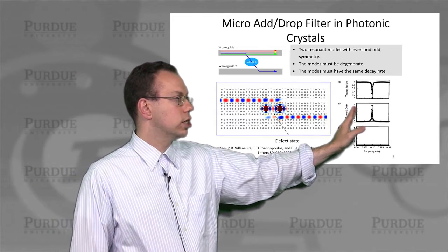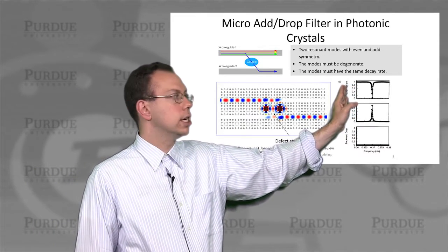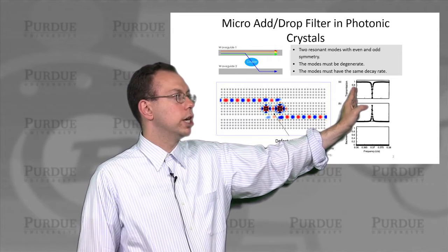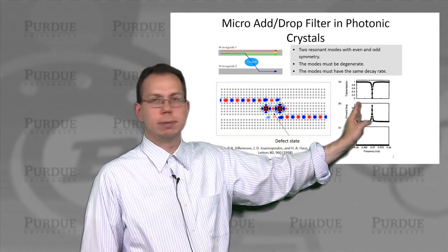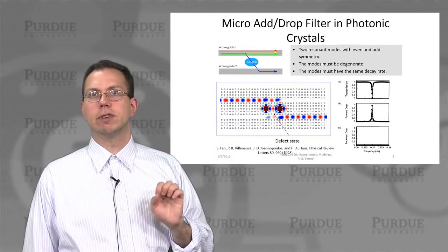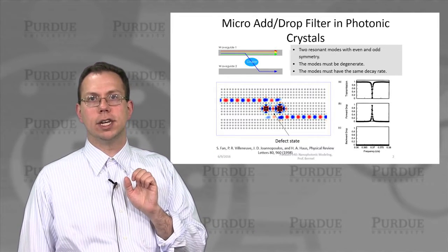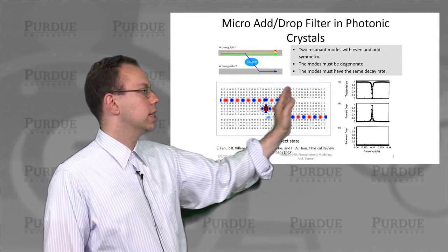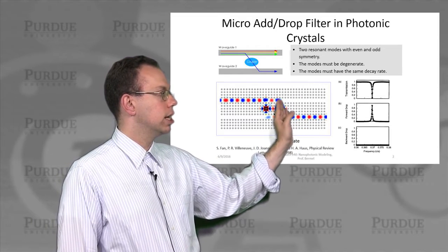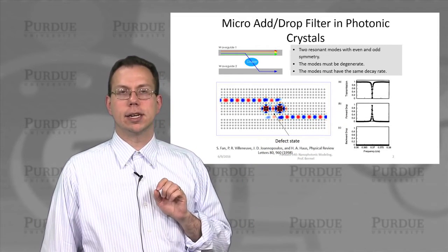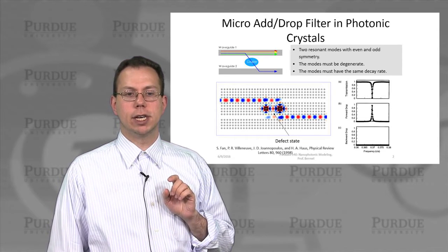This is shown explicitly as a transmission that is essentially one for almost every frequency, and then it just drops for a very narrow range of frequencies. This can be targeted to whatever frequency you need, allowing you to drop one frequency but let everything else pass just like nothing happened — a very nice capability.